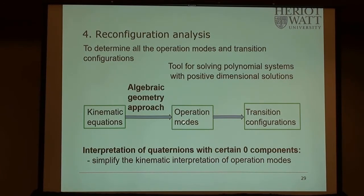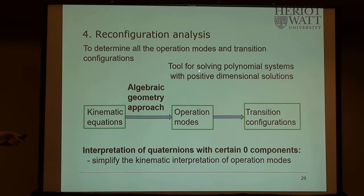Based on the operation modes, we can find the common configuration—called the transition mode. The robot can switch from one mode to another through this configuration. Among the three steps, the algebraic geometry tools are used directly. In order to use these tools effectively, we need to select coordinates properly to simplify the solution.